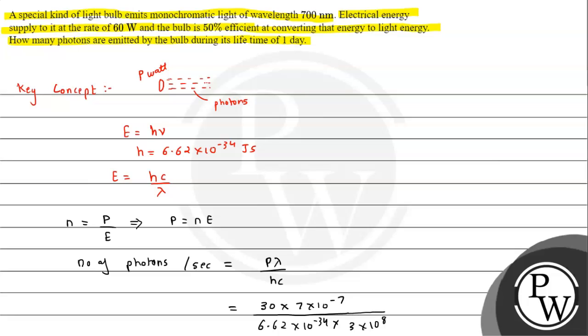Per second we are getting this value. If we resolve it, we can say the number of photons per second, the number of photons emitted per second will be equal to this value.